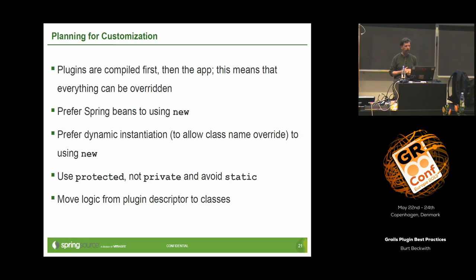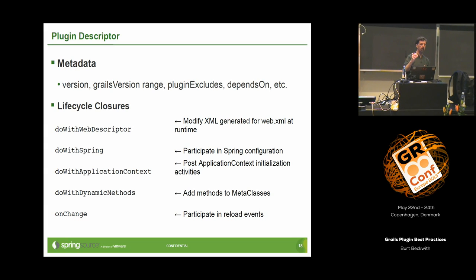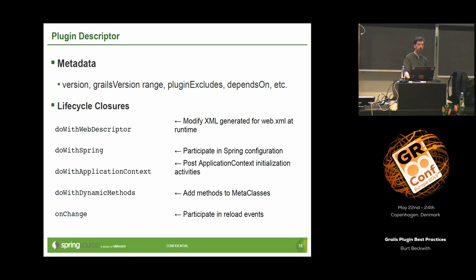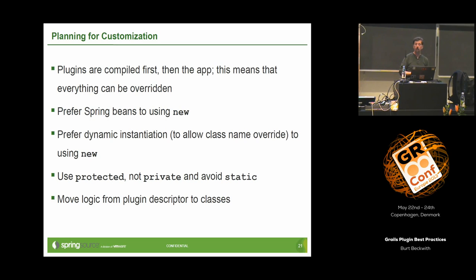Another thing I've seen: in those plugin callbacks like doWithSpring and doWithApplicationContext, there can be a tremendous amount of logic that's hard to test. If all your code is inside the plugin descriptor, it's hard to create a new instance and call it. What you want to do instead is have your plugin descriptor call one or more classes in your application — then you can test that code, and it also makes it easier for application users to change that behavior since it's now in a regular class with protected and public methods, not hidden inside the plugin descriptor.